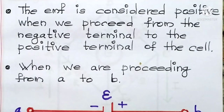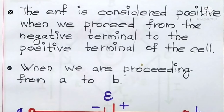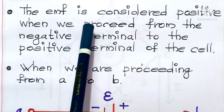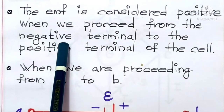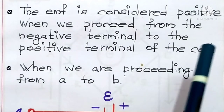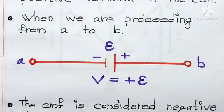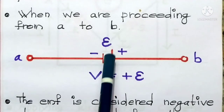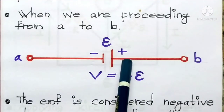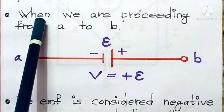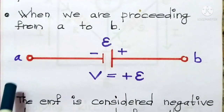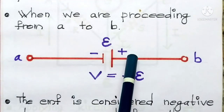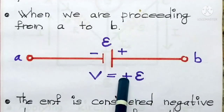The EMF is considered positive when we proceed from the negative terminal to the positive terminal of the cell. For example, here we have Terminal A, Terminal B, and a cell. When we are proceeding from A to B — that means from the negative terminal to the positive terminal — the EMF takes the positive sign.